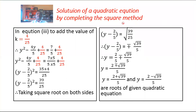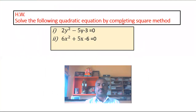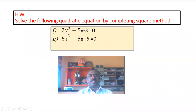Today's homework: solve the following quadratic equations by completing the square method. First equation: 2y squared minus 5y minus 3 equals 0. Second equation: 6x squared plus 5x minus 6 equals 0. Find the roots of these two quadratic equations using the completing square method.